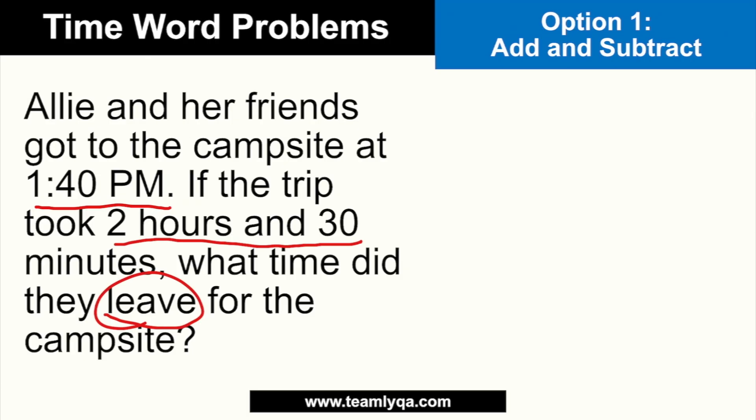If you're not sure which operation to use, think of a simpler version first. For example: if I arrived home at 6 PM and the trip took 2 hours, what time did I leave? Your mind automatically goes to: if I arrived at 6 PM and traveled for 2 hours, I must have left at 4 PM. What you did there was 6 PM minus 2 hours equals 4. So obviously, this would be a subtraction. That's the operation you'll use.